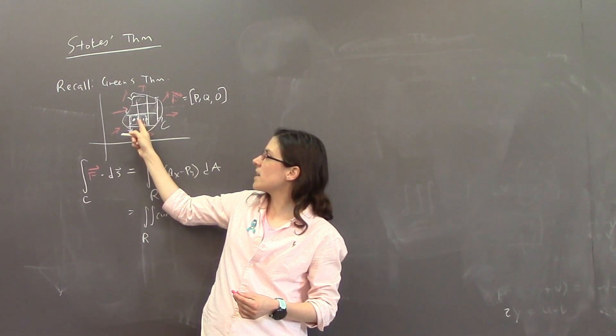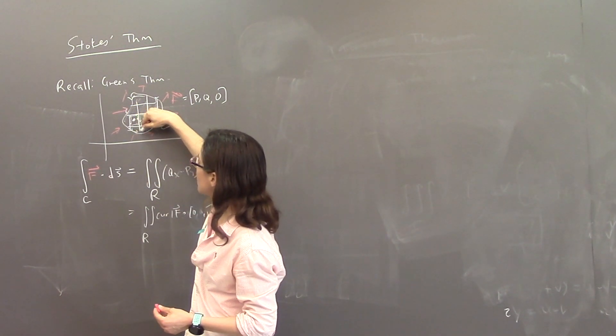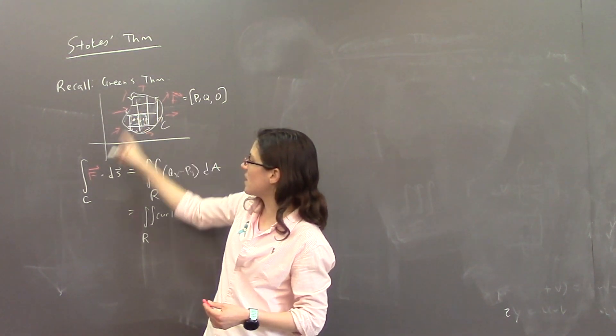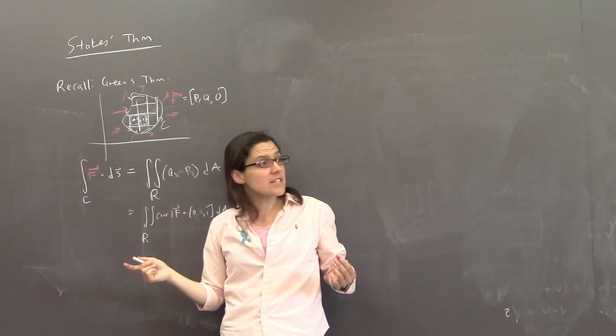But maybe you can see that if you did around each little box inside, these two cancel out because they're equal and in opposite directions. And all you're left with is the bits around the outside. So that ends up with just the circulation around the outside. So that was the intuition behind Green's theorem.